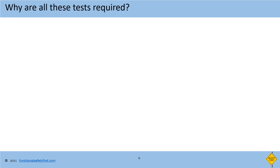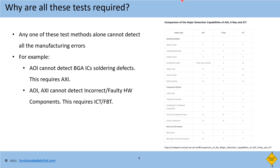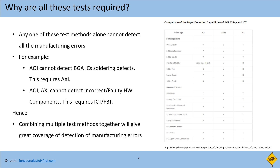We saw all these test methods are used at appropriate stages in the manufacturing process. But why are all these test methods required? Any one of these test methods alone cannot detect all the manufacturing errors. The table on the right side explains the defect type, which method can detect it, and which cannot. For example, AOI cannot detect BGA type IC soldering defects — this requires AXI. AOI also cannot detect incorrect or faulty hardware components — this requires ICT or flying probe testing. Hence, combining multiple test methods together gives greater coverage in detection of manufacturing errors.